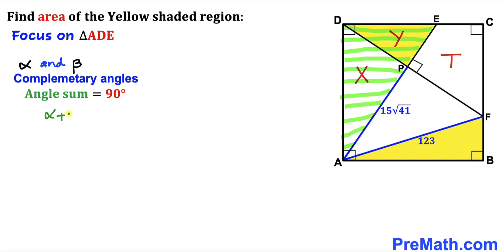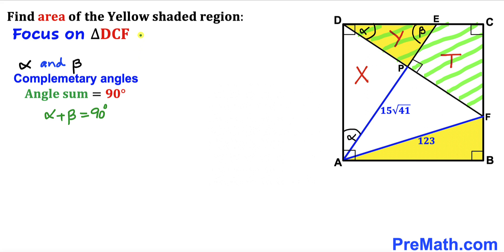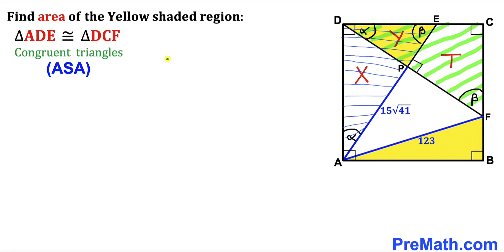The sum of angles alpha and beta must equal 90 degrees. In triangle ADE, this angle is alpha and the right angle is 90 degrees, so the remaining angle must be beta. In yellow triangle EPD, the right angle is 90 degrees and one angle is beta, so the remaining angle must be alpha. In triangle DCF, one angle is alpha and the right angle is 90 degrees, so the remaining angle is beta.